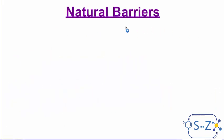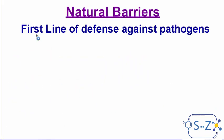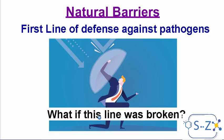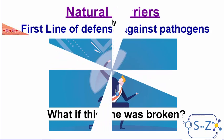The natural barriers can be considered as the first line of defense against pathogens. They protect our body before the pathogen even tries to enter. But here comes a question: what if this line was broken? Is the body now susceptible to diseases, or will it surrender to the pathogen?